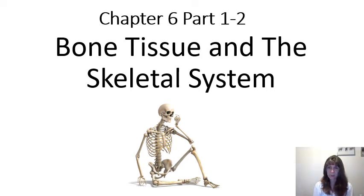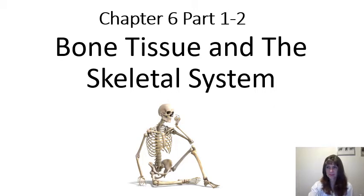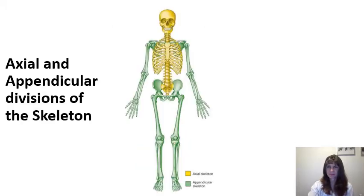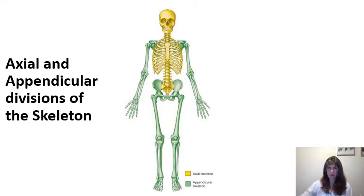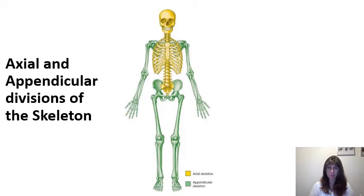This recording is Chapter 6, Part 1 of 2, Bone Tissue and the Skeletal System. As we've previously discussed, the body can be broken down into two main portions: the axial portion, which is straight up and down from your head to approximately your crotch, and then the appendicular portion of your body, which includes your appendages — your arms and your legs.